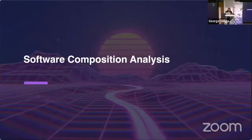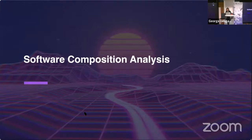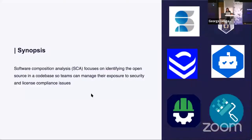Let's see what a basic pipeline comprises. With the GitHub Marketplace, you can leverage security applications and actions to secure your pipeline at each development stage. For a really basic pipeline, you'll have three things: Software Composition Analysis (SCA), a tool to prevent secret sprawling, and a tool for static code analysis. The SCA focuses on identifying open source in a codebase so teams can manage their exposure to security and license compliance issues.